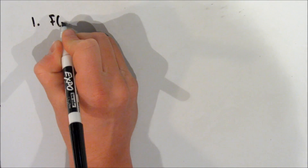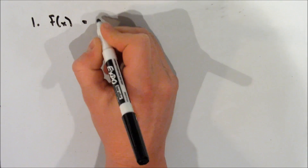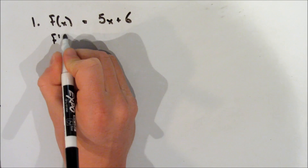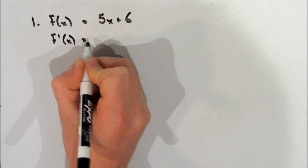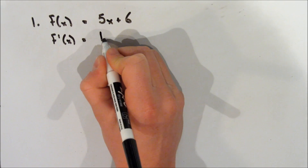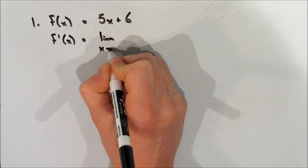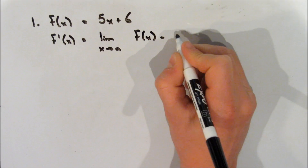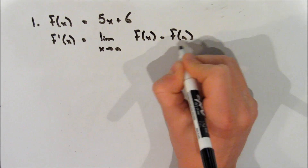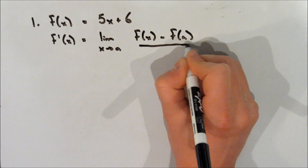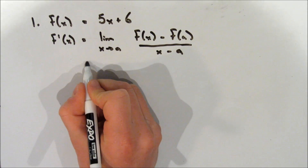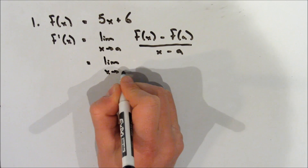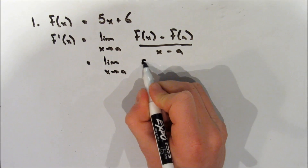Alright, so our first example. We're going to make a function f(x) equal to 5x plus 6. So we're going to take the derivative of this function. f'(x) is equal to the limit as x approaches a, and now f(x) minus f(a) over x minus a. We're going to keep the limit on the left-hand side, as always.